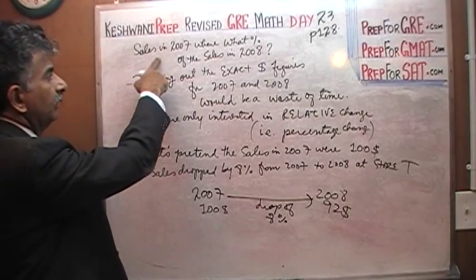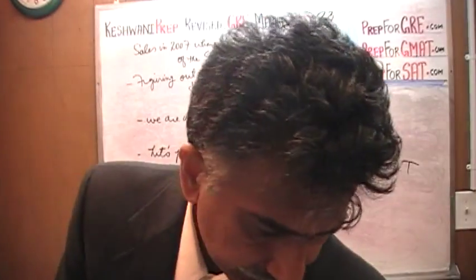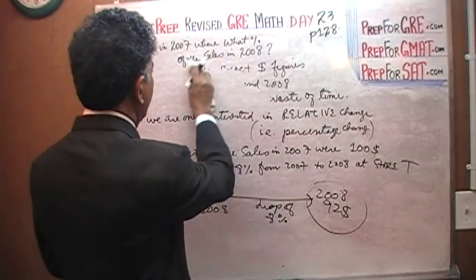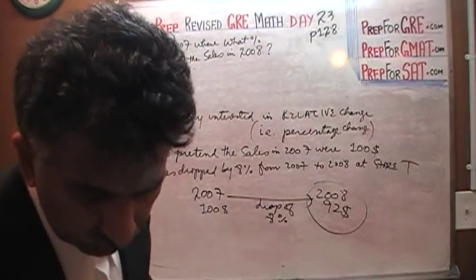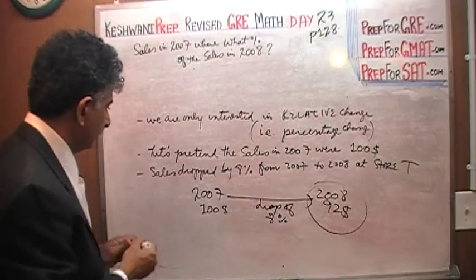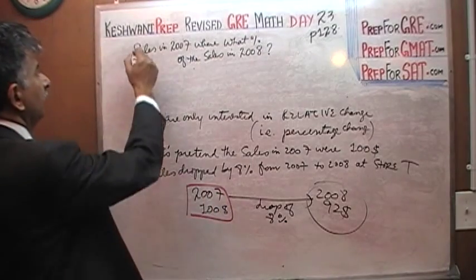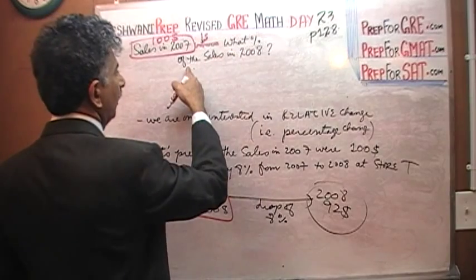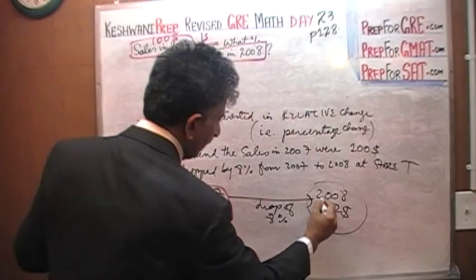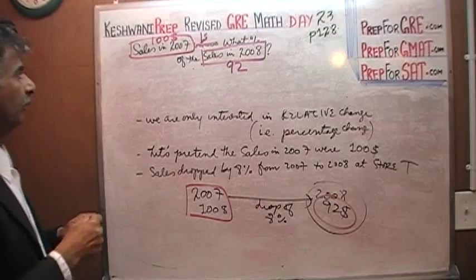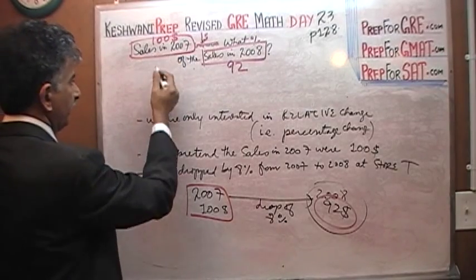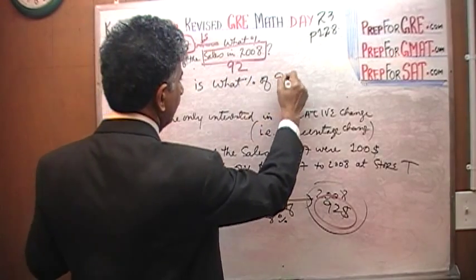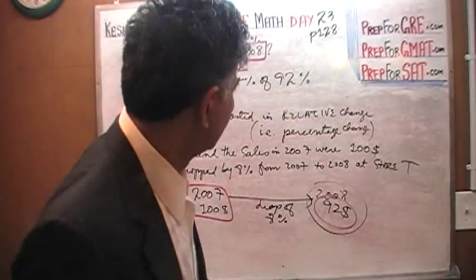Now the question is: sales in 2007 were what percentage of the sales in 2008? We know 2008 is 92 dollars. So the question boils down to: 100 dollars is what percent of 92? That is the question — 100 is what percent of 92?